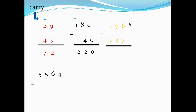One hundred seventy-six plus one hundred thirty-seven: start from units. Six plus seven equals thirteen — write three and carry one to the next digit. Next digit: seven plus three, plus the carry one — one plus seven is eight, eight plus three equals eleven. Write one and carry one to the next digit.